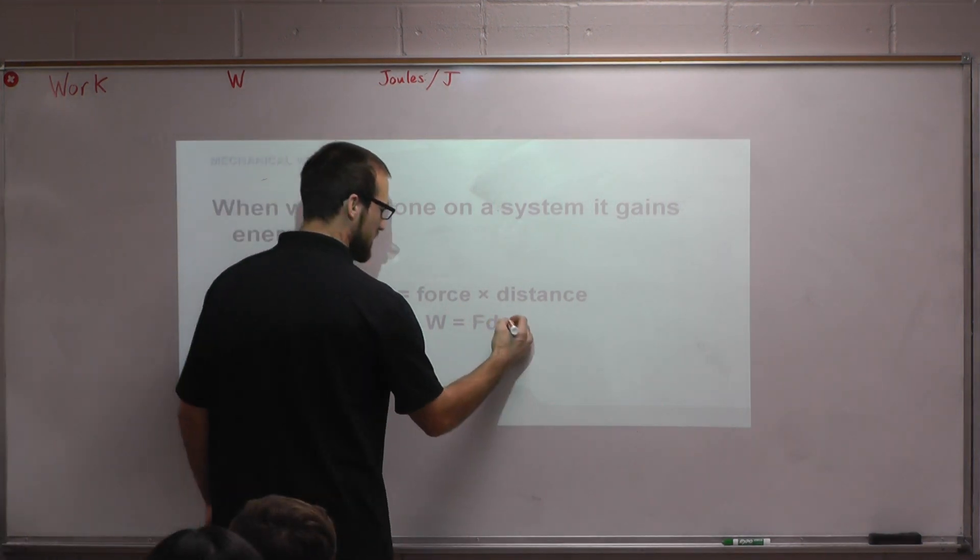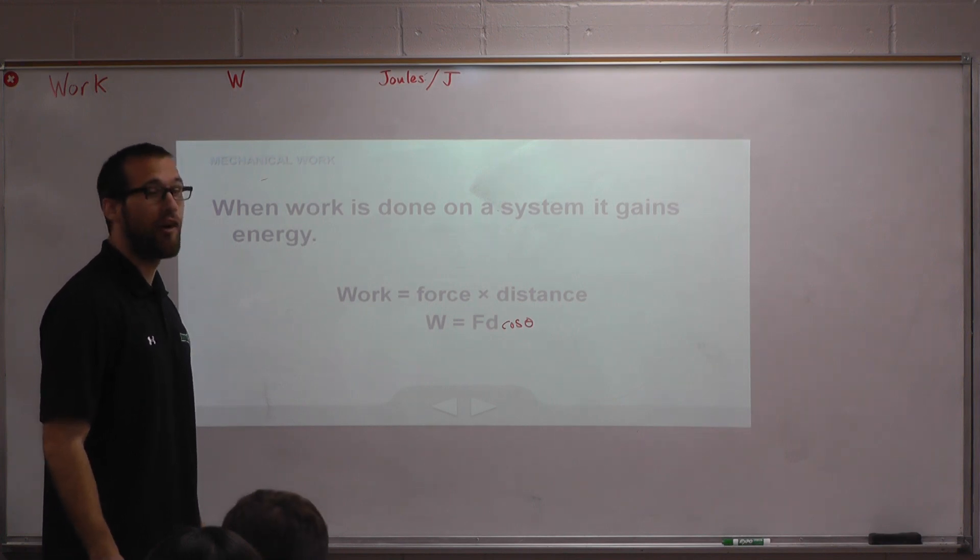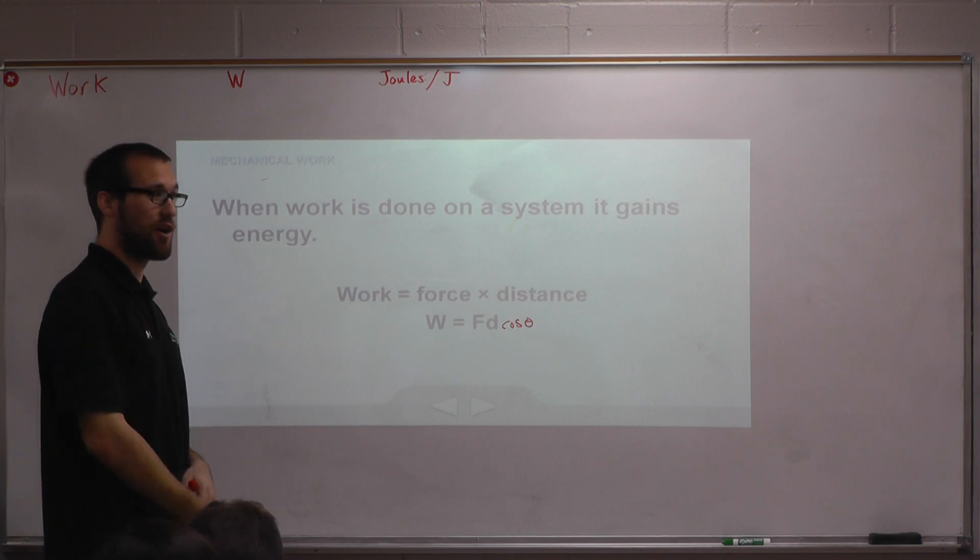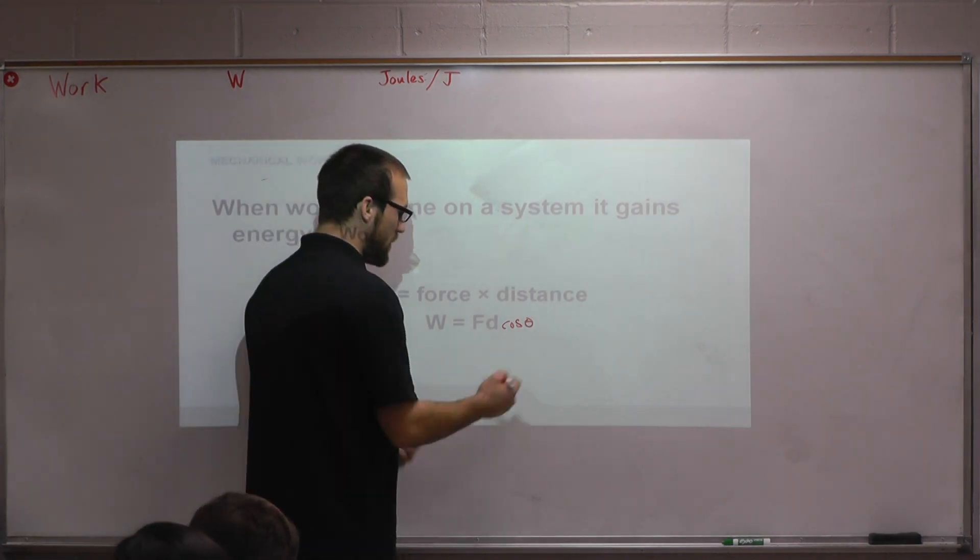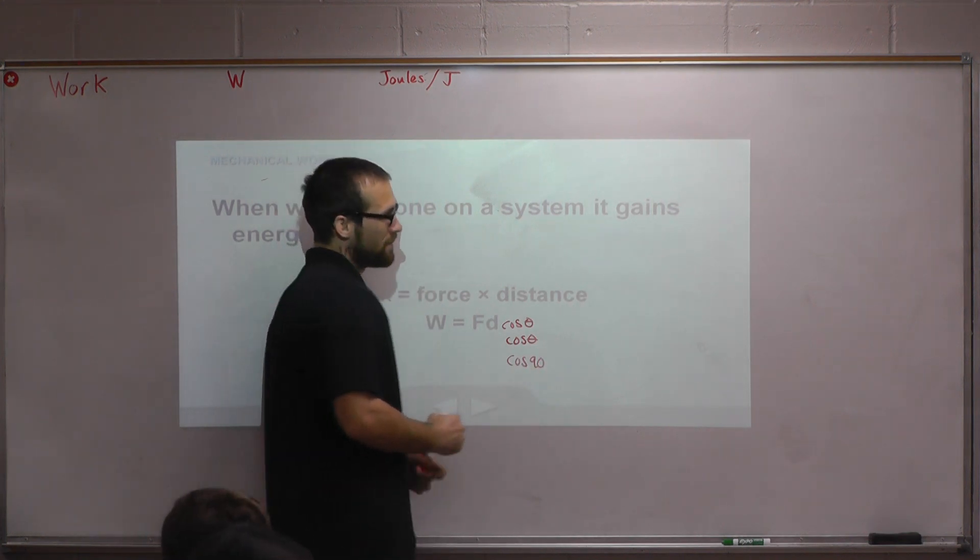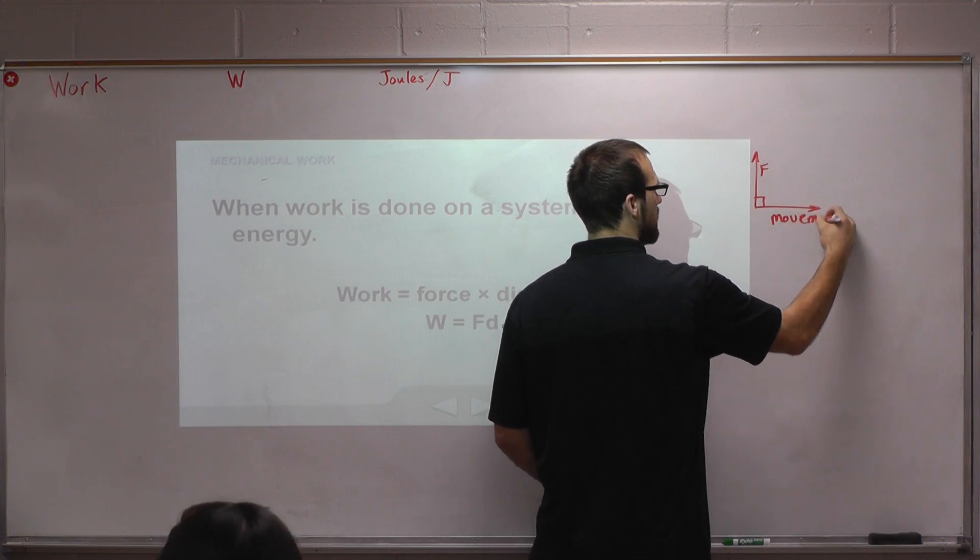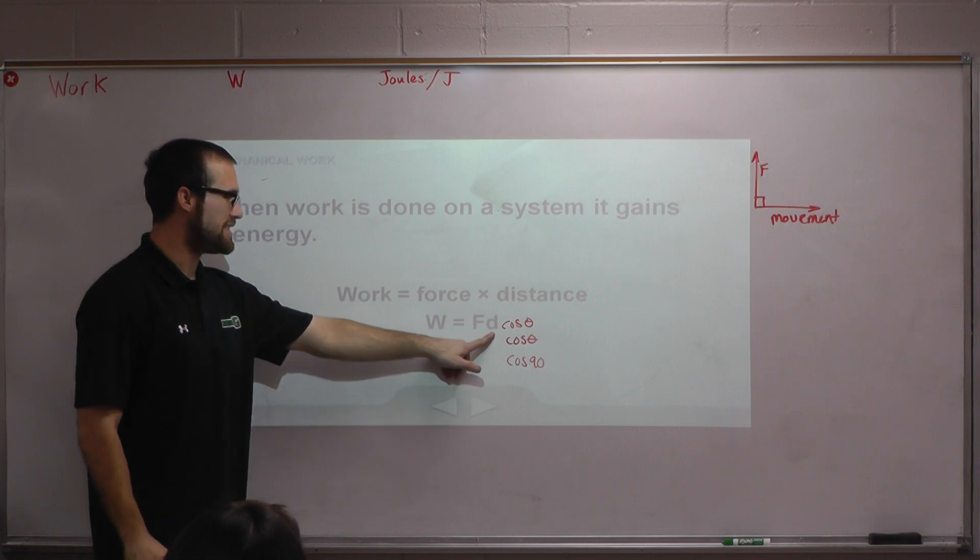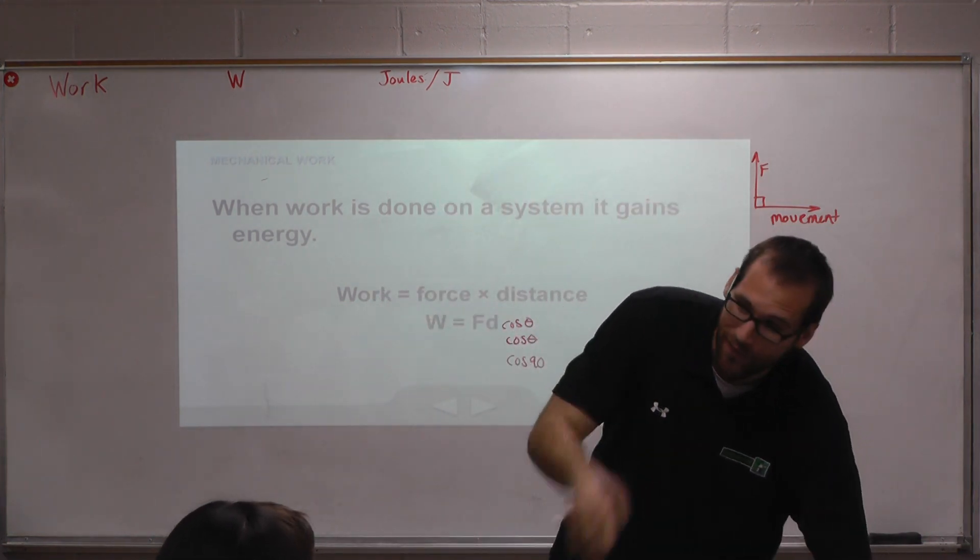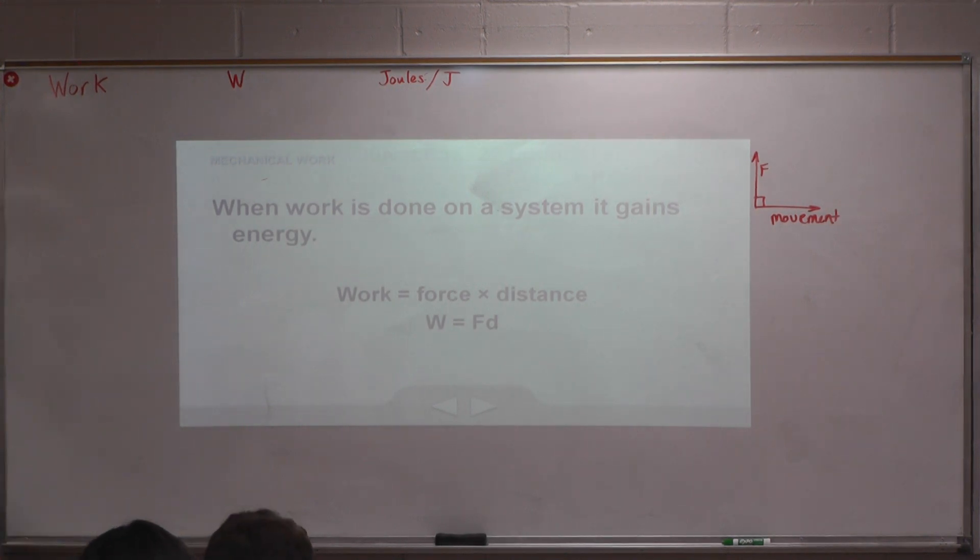This is what the equation looks like in physics. Cosine of the angle tells us whether or not that force is straight with it, or is it perpendicular, or is it at an angle. Cosine of 90 is zero. If I have a 90 degree angle between my force and my movement, cosine of 90 is zero, so the work is zero. We're going to say that all of the forces that we're doing will always be in the direction of motion.